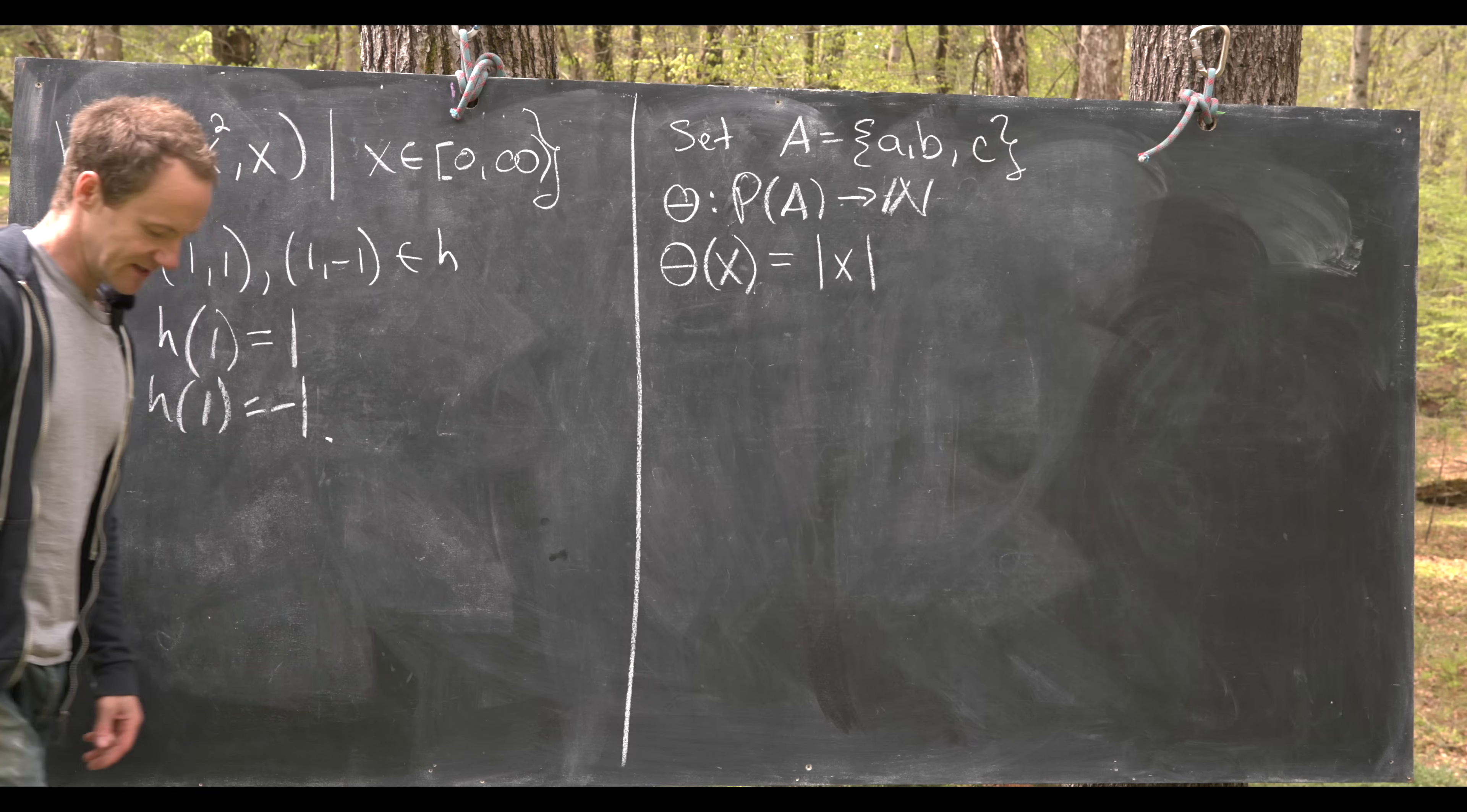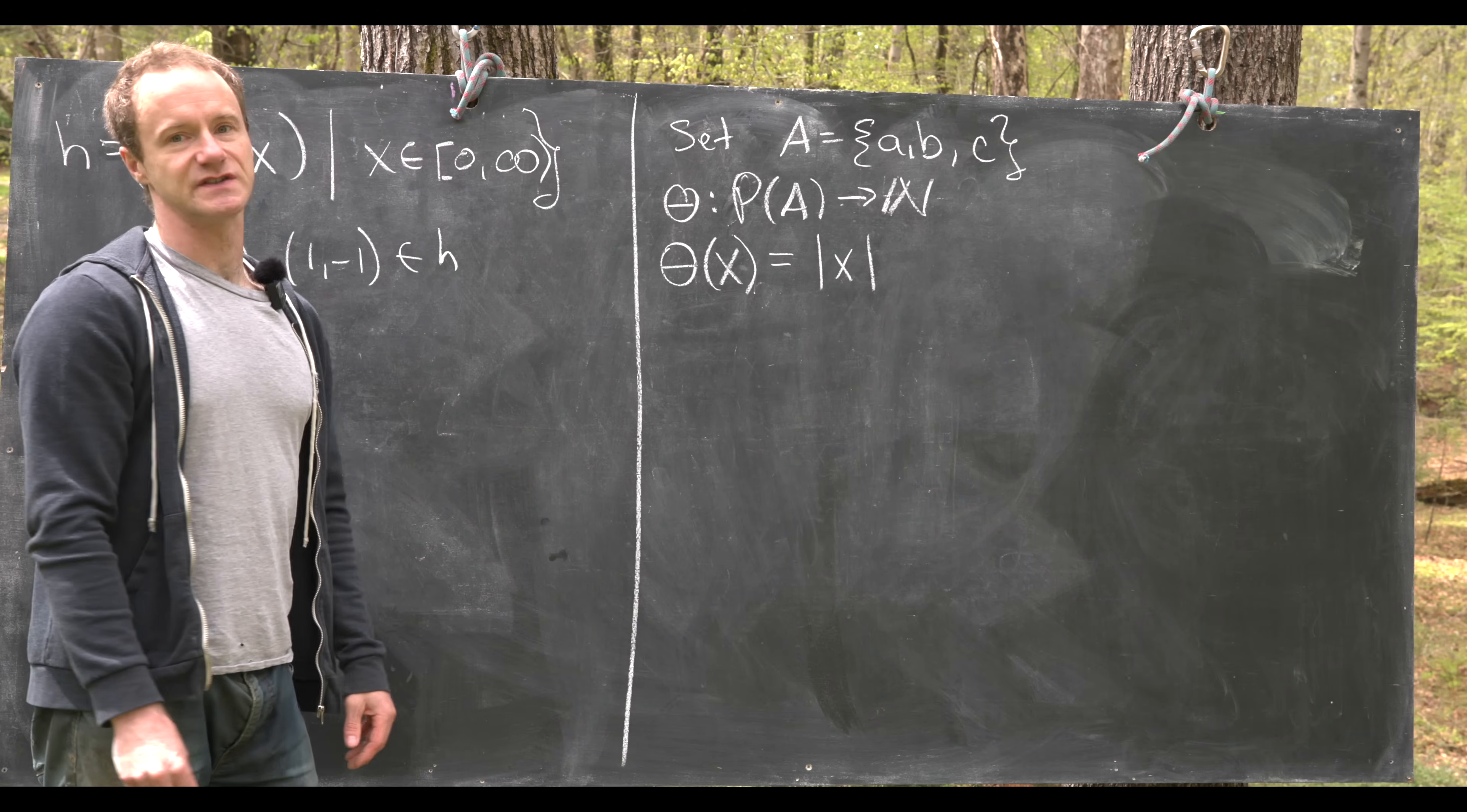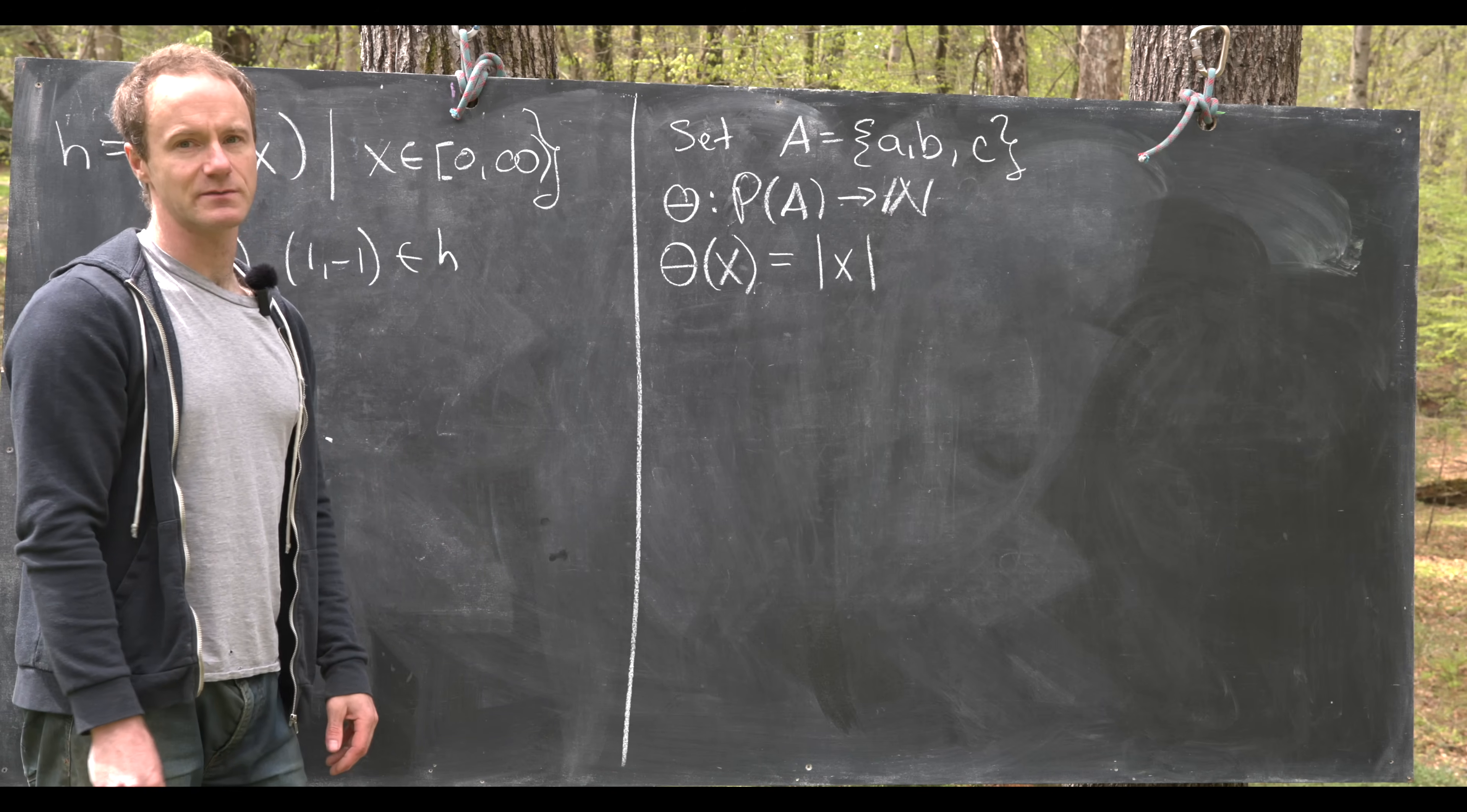So now let's look at this last example. So it's a little bit different. We've got a set A which is three elements {a,b,c}. And then we've got this θ which goes from the power set of A to the natural numbers.